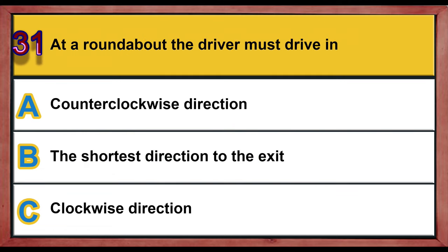Question 31. At a roundabout, the driver must drive in: A. Counterclockwise direction. B. The shortest direction to the exit. C. Clockwise direction. Correct answer is A: Counterclockwise direction.